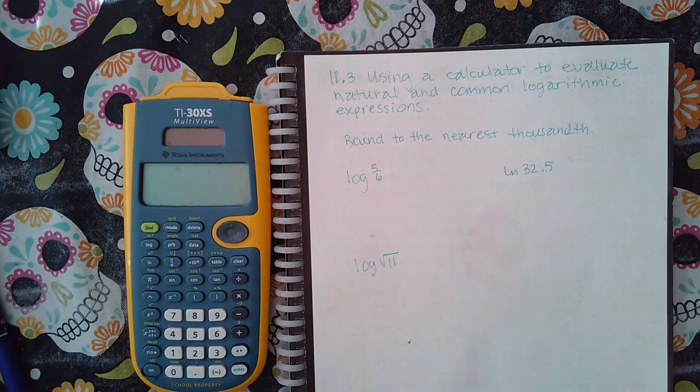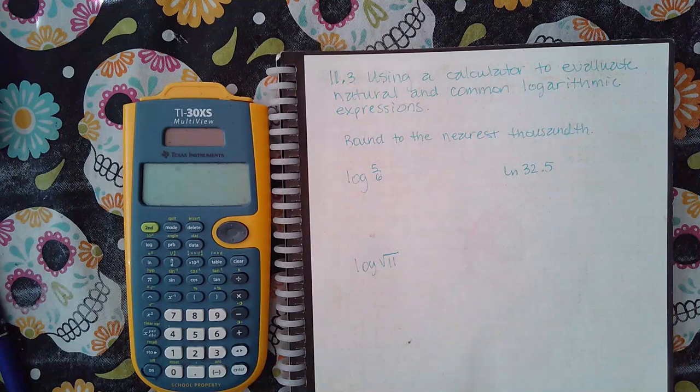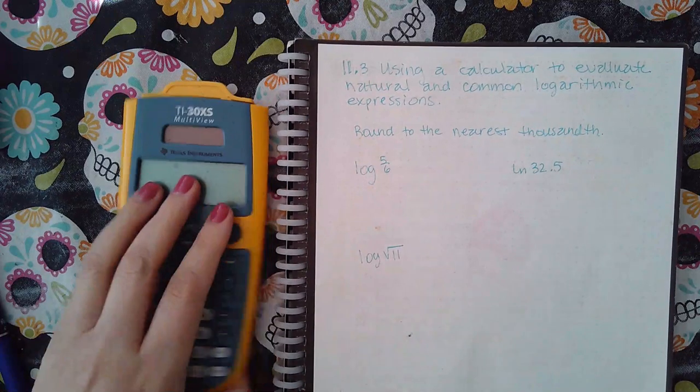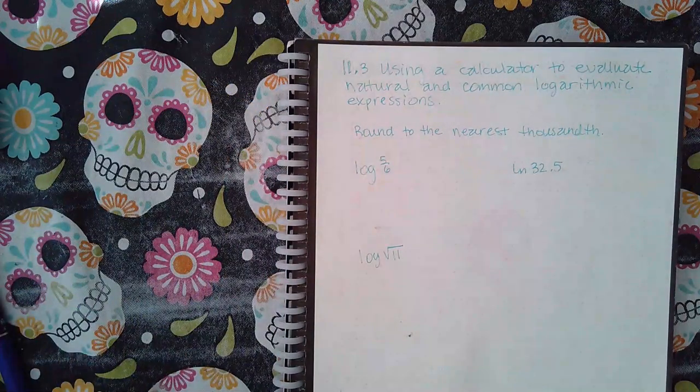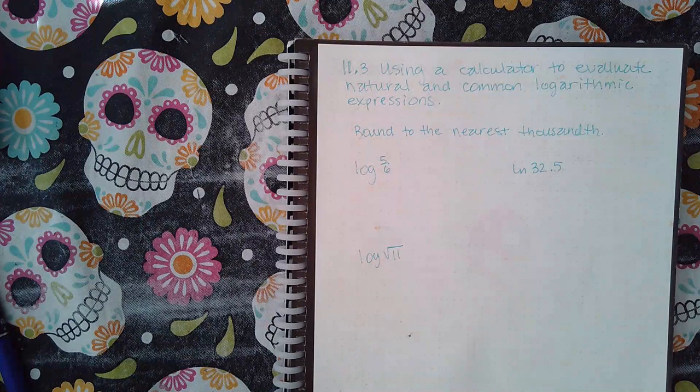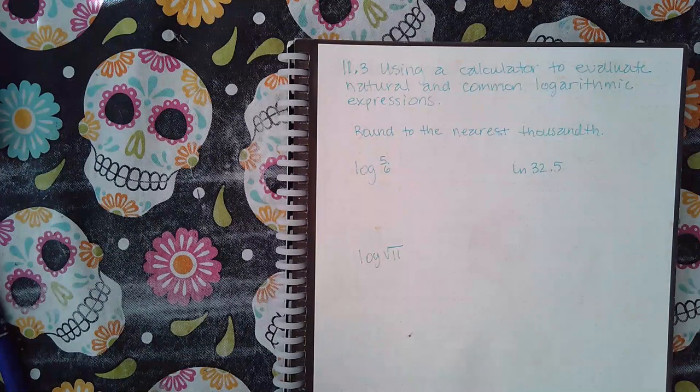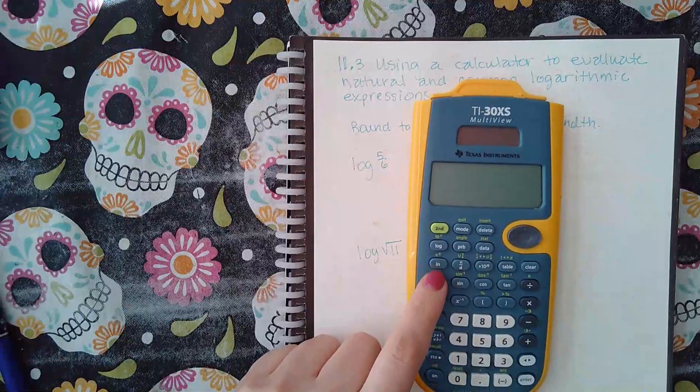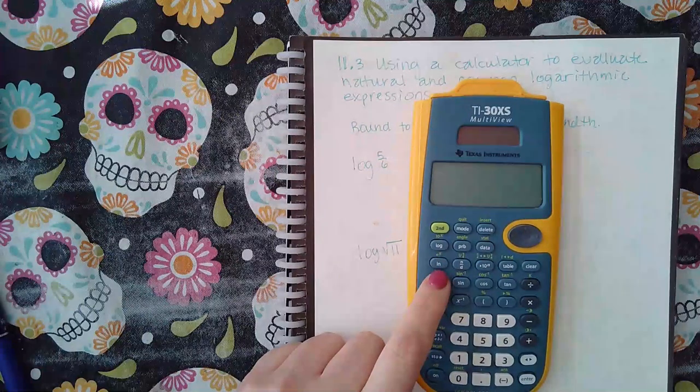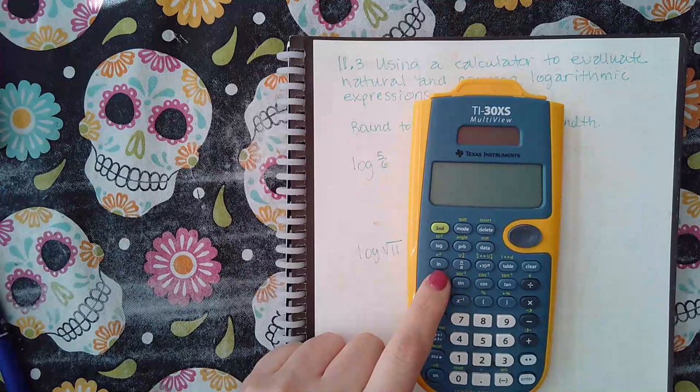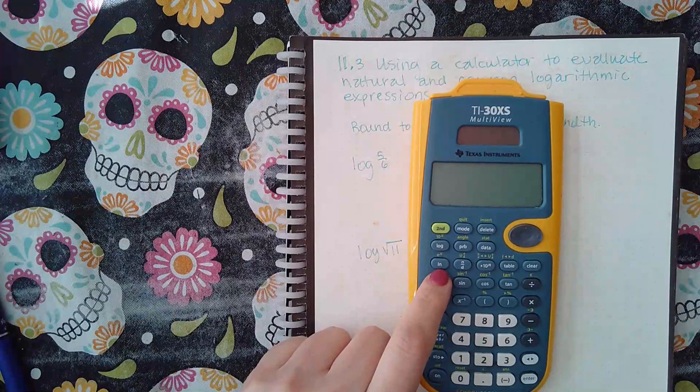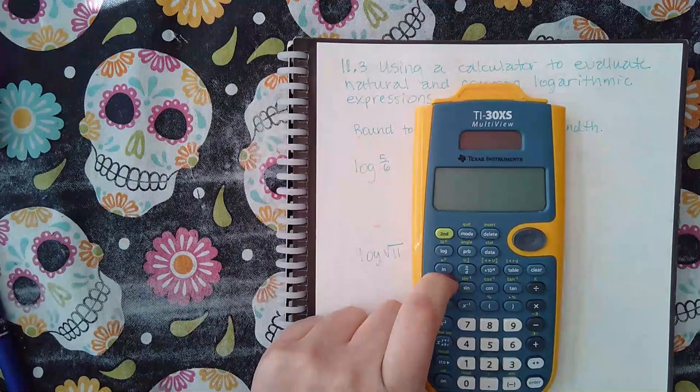Here we have section 1.3: using a calculator to evaluate natural and common logarithmic expressions. You have two buttons in your calculator that perform logarithmic evaluations. One is the log button and the other is the ln button. Log is the regular common log and ln is the natural log.